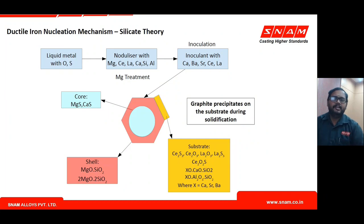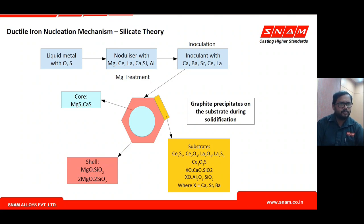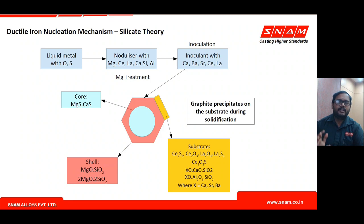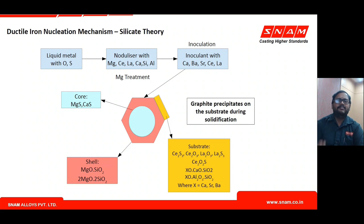A question arises: why is inoculation needed in ductile iron when a nodulizing treatment has already been done? The core-and-shell structure has a crystallographic incompatibility with precipitating graphite. Graphite precipitates in an HCP crystal structure, and for graphite to adhere and grow on a substrate, both must have similar crystallographic structures. If there is a misfit, graphite cannot precipitate favorably, becomes combined carbon, and nodularity is lost.